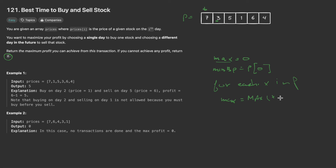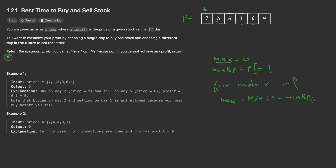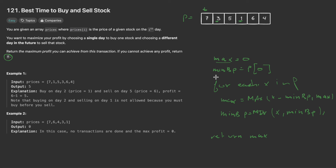We always find the maximum between the old max and the newly calculated profit. Then we minimize the buying price: min buying price equals the minimum of x and the current min buying price. Finally, we return max. Whether we achieve a profit or not, we return zero since max is already initialized to zero. That's the intuition for solving this problem.